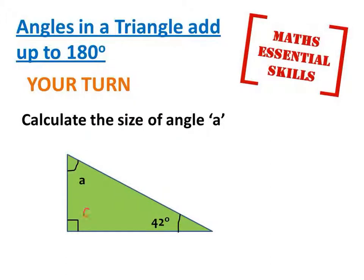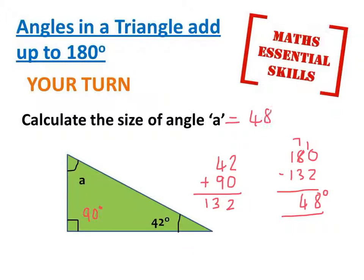this question because this 90 degree right angle isn't stated as 90, but we know the two angles that they give us, the 90 and the 42, add up to 132. When we take that away from 180, I end up with 48 degrees. Angle a is 48 degrees.